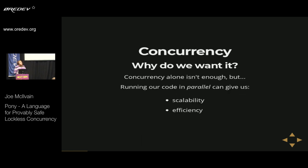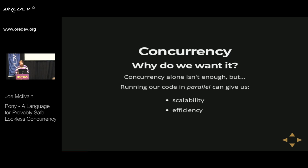So why do we want concurrency? It turns out that just prepping our application for concurrency isn't enough to get any direct benefits, but it allows our code to be run in parallel, which gives us some very important benefits. We want to be able to add processors to get proportionally more throughput — that's scalability. And we want to put all of our processors to work for maximal efficiency, with no idle processors.